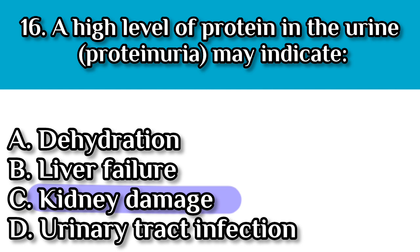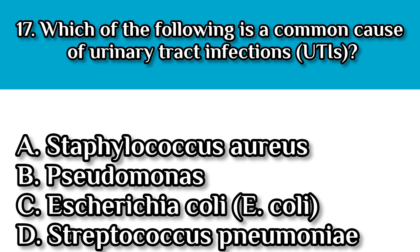Question number seventeen: Which of the following is the most common cause of urinary tract infections? Our answer should be Escherichia coli, which is E. coli, because E. coli, a bacteria normally found in the colon, is the most common cause of UTIs.